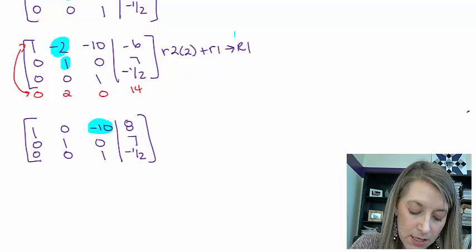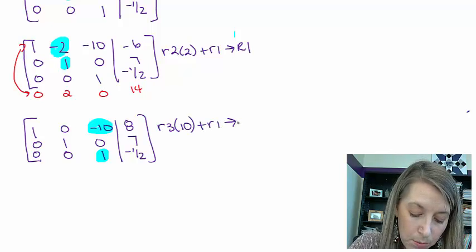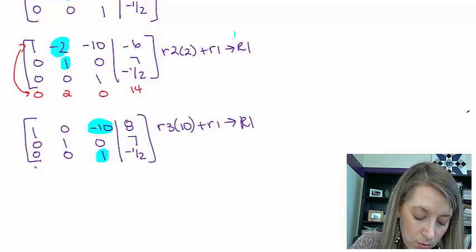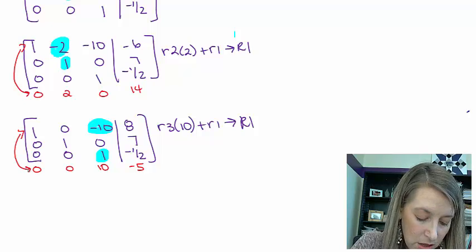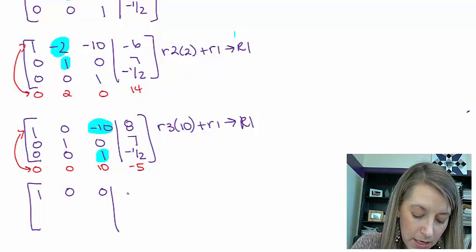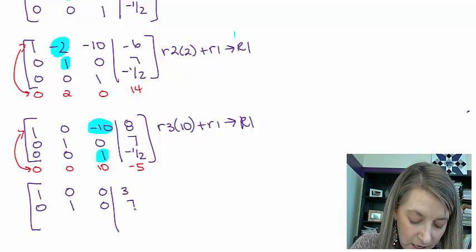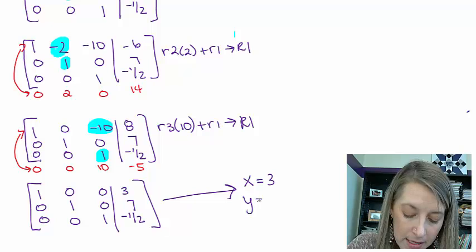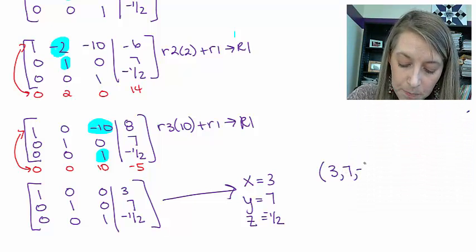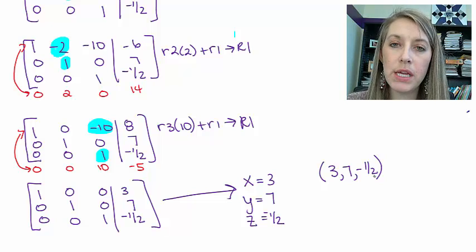My last operation is to eliminate the -10 by comparing to row 3. I take row 3 times 10 and add it to row 1. Scratch work: 0, 0, 10, and -½ times 10 is -5. Adding: 1, 0, negative 10 plus 10 gives 0, and 8 minus 5 gives 3. Everything is exactly what I wanted. In equation format: x equals 3, y equals 7, z equals negative one-half. As an ordered triple: (3, 7, -½).